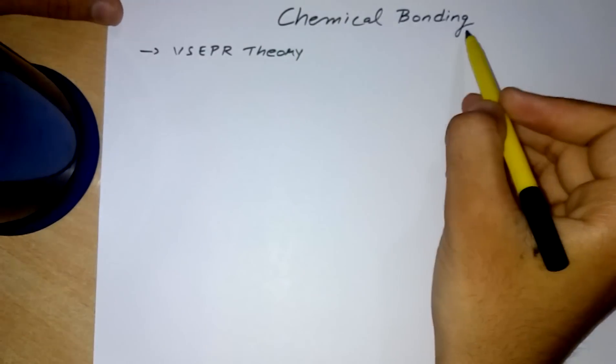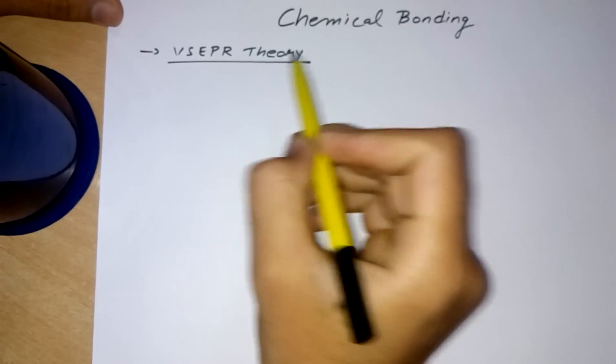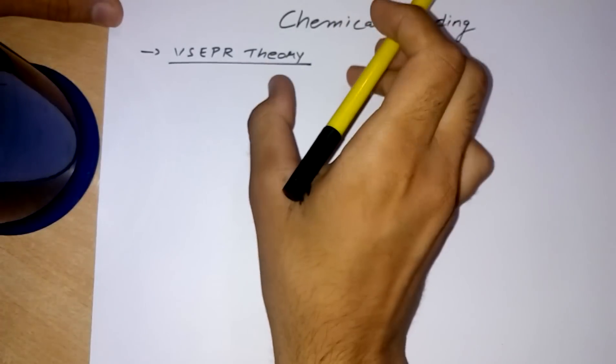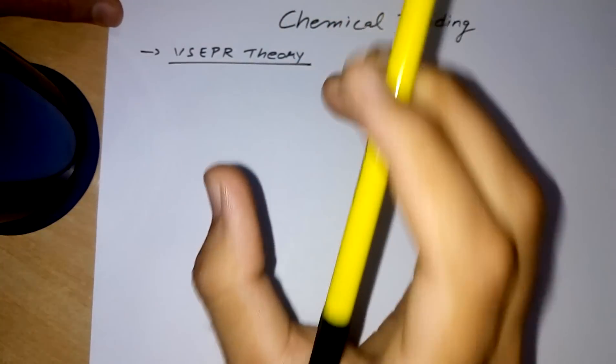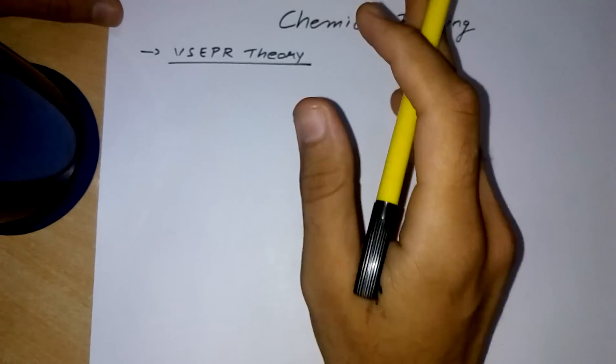Hey, here we talk about chemical bonding. In that, we take VSEPR theory here. I know you're not able to learn some shapes of the molecules if you are given the lone pairs and the bond pairs, but I now have a very interesting way that you can learn them very easily.